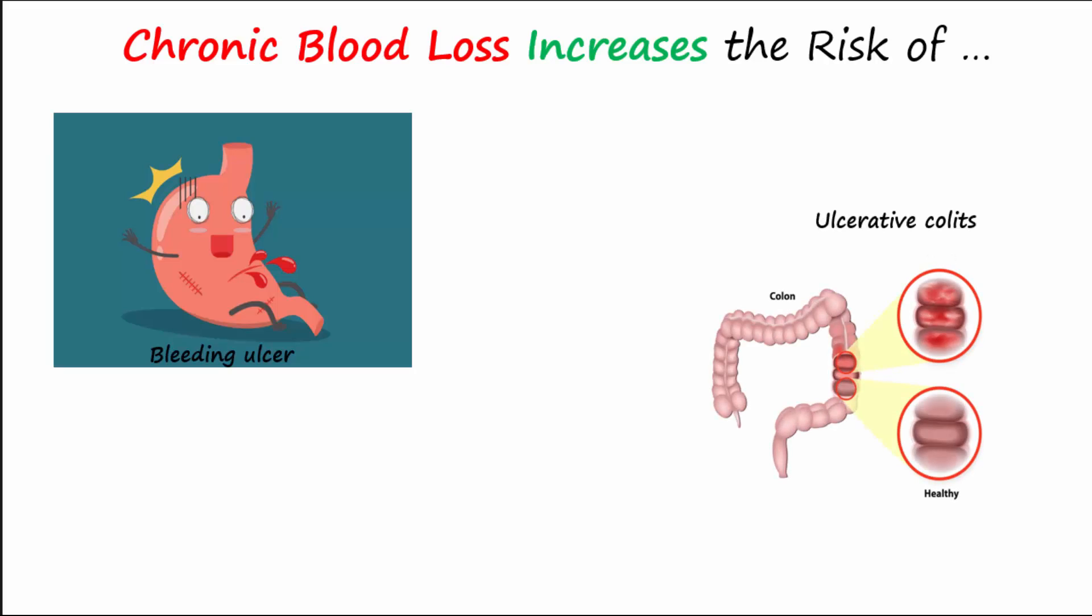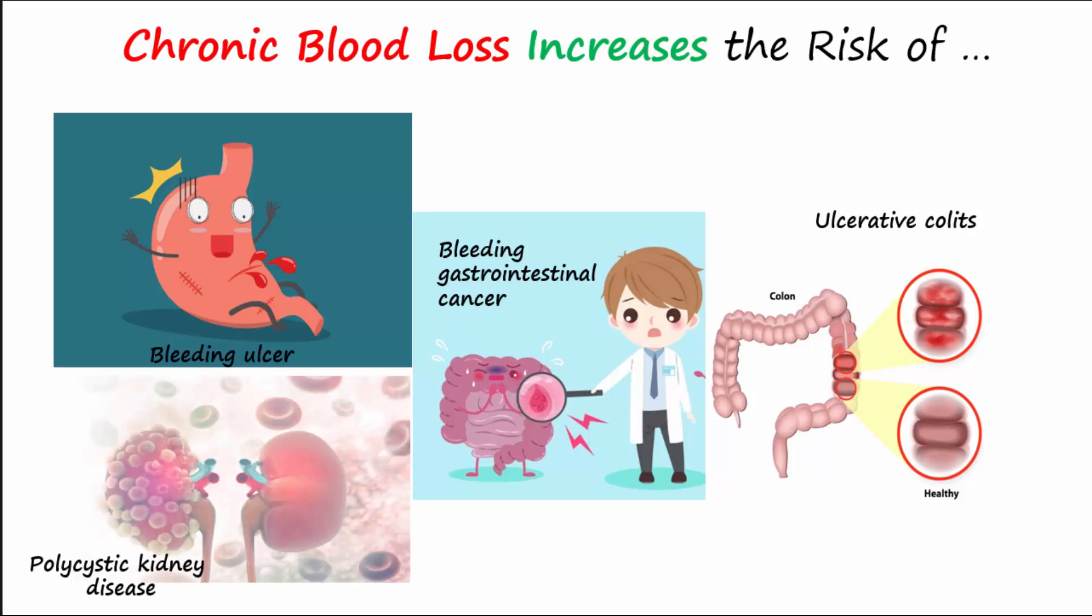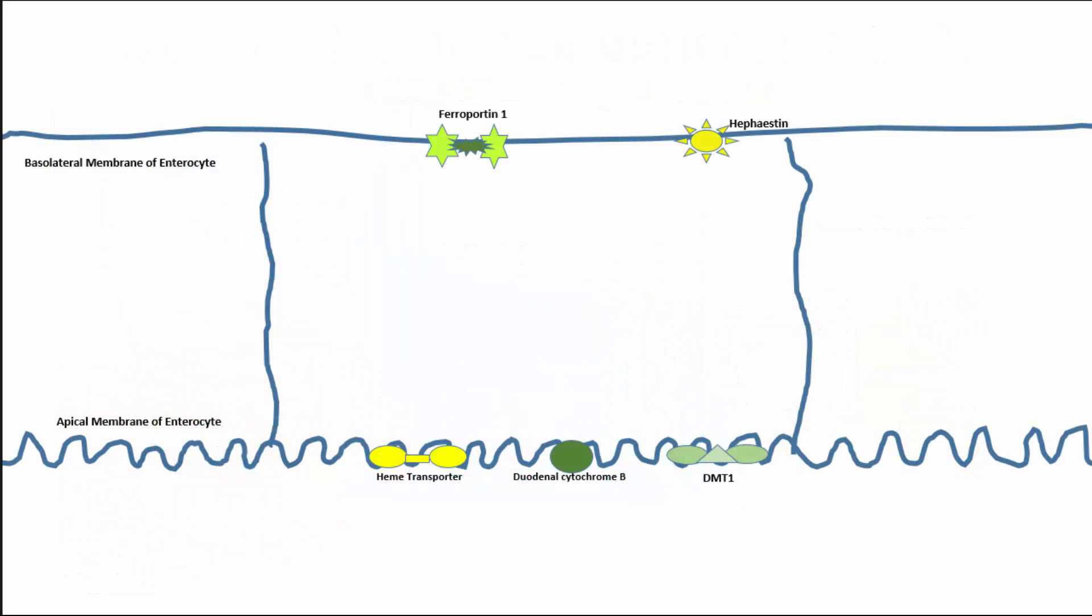Chronic blood loss from conditions such as bleeding ulcer, ulcerative colitis, bleeding gastrointestinal cancer, or polycystic kidney disease all increase iron deficiency anemia. In order to more fully understand iron deficiency anemia, it is important to understand how heme iron and non-heme iron are absorbed, transported, stored, and regulated in the body.